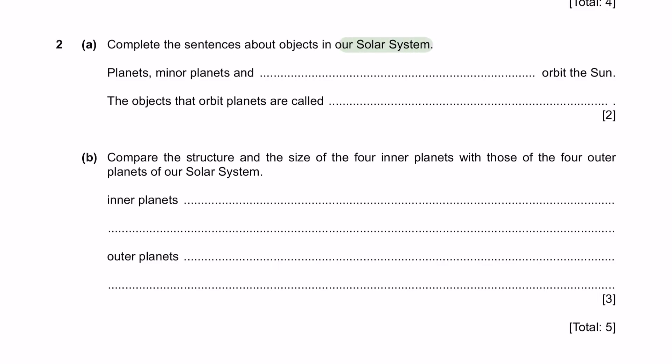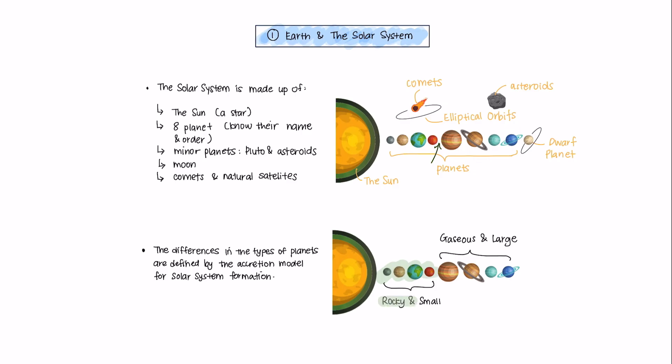Part C. Explain why the Sun appears to move across the sky each day. Planets, minor planets and asteroids orbit the Sun. The objects that orbit planets are called Moon, which is our natural satellite.